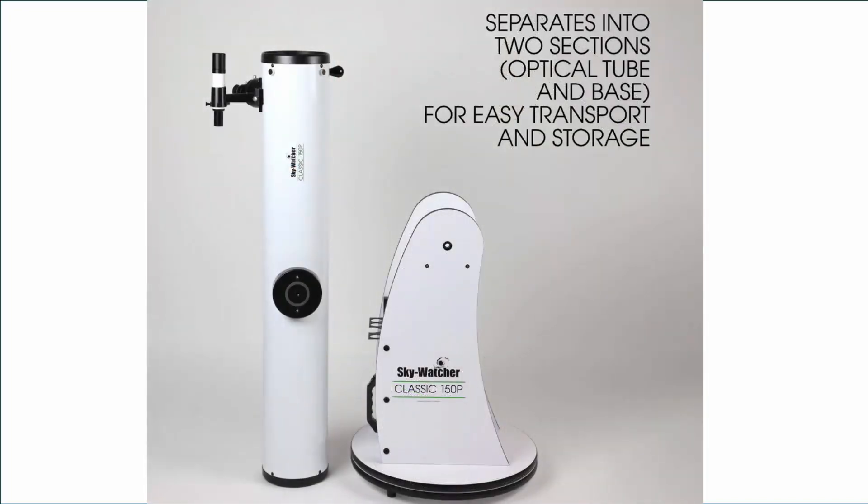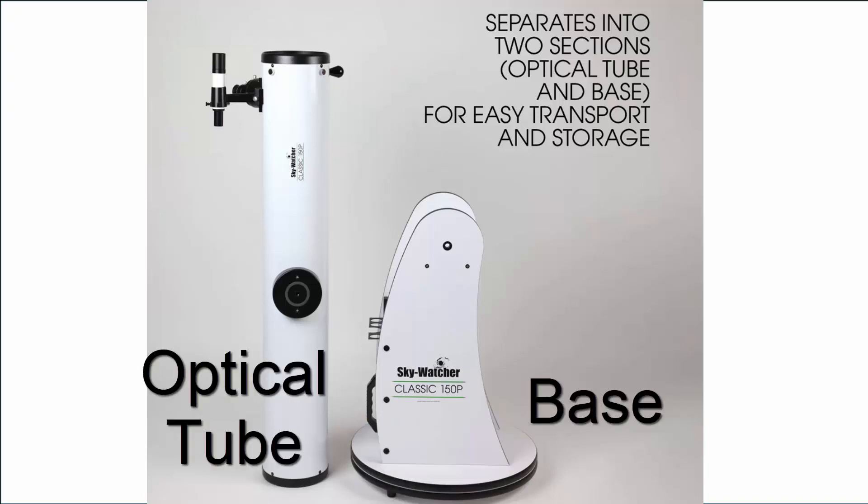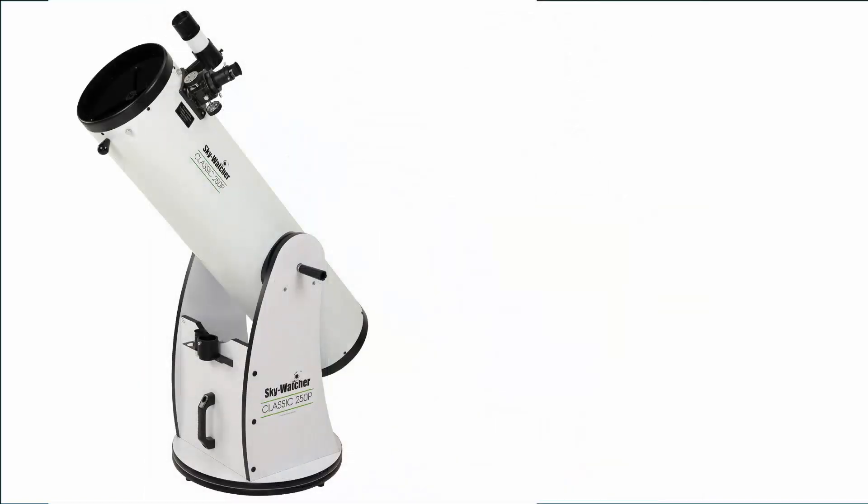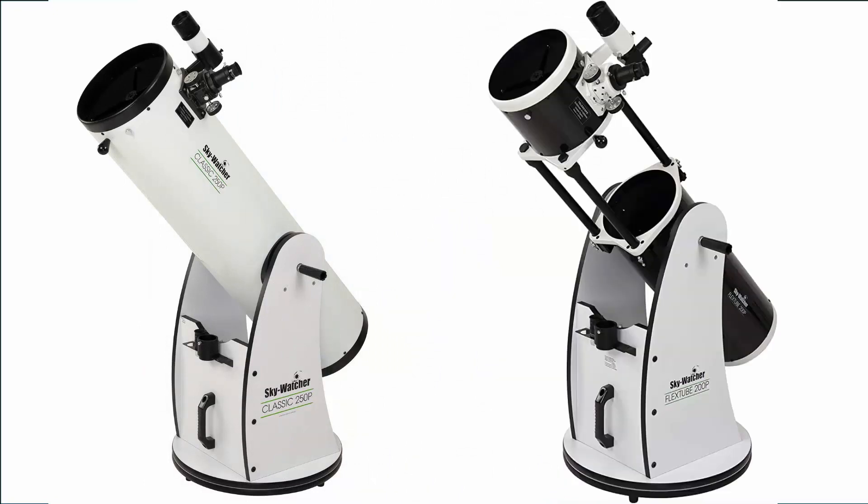Your Dobsonian telescope will most likely come in two parts: a base that can rotate clockwise or anti-clockwise, and the optical tube that holds the mirrors. Some tubes are a single long cylinder while other tubes are in two parts and are collapsible to make the tube shorter for easier transport and storage.